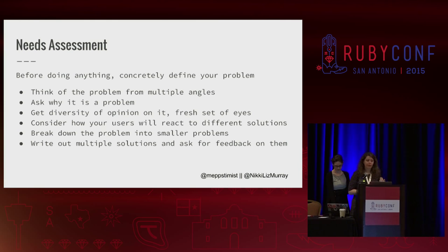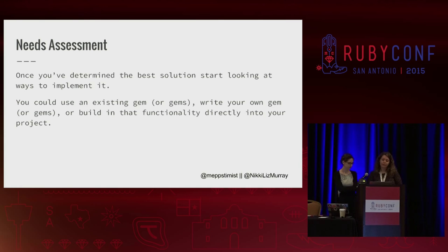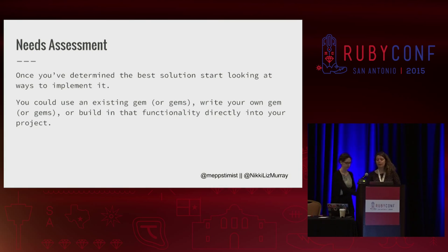Consider your users because they're always going to be your stakeholders — how will different solutions impact them, how will it change their lives, how will they react? Sometimes we approach a problem thinking it's just one problem, but really it's five or six. Break it down and decide which is the most important to solve first. Write out different solutions and look to different people for feedback. Once you've determined the best solution, start looking for ways to implement it — you could use an existing gem or gems, write your own, or build that functionality directly into your project.